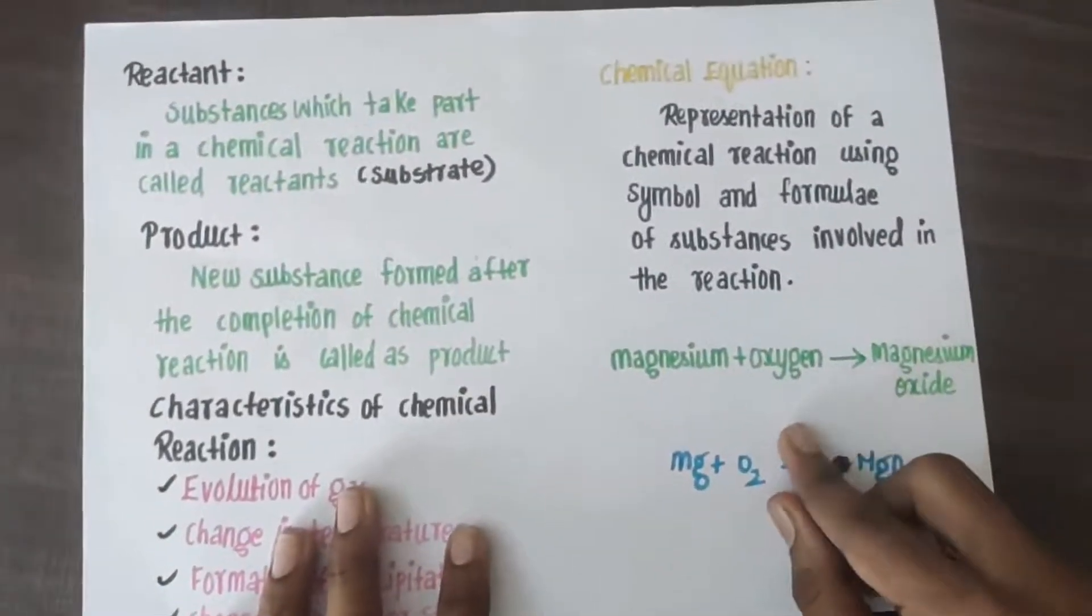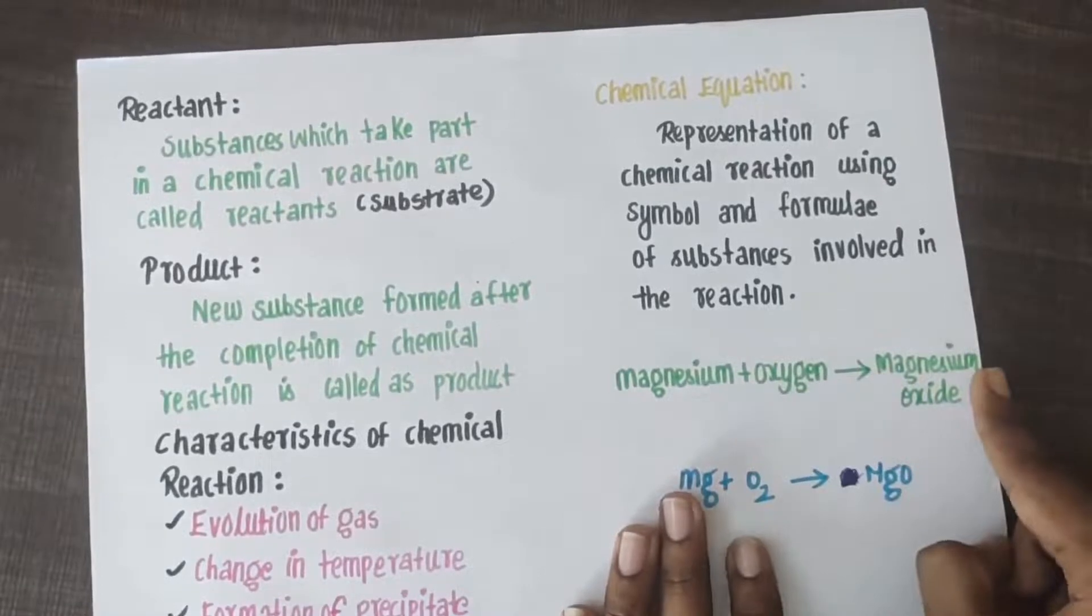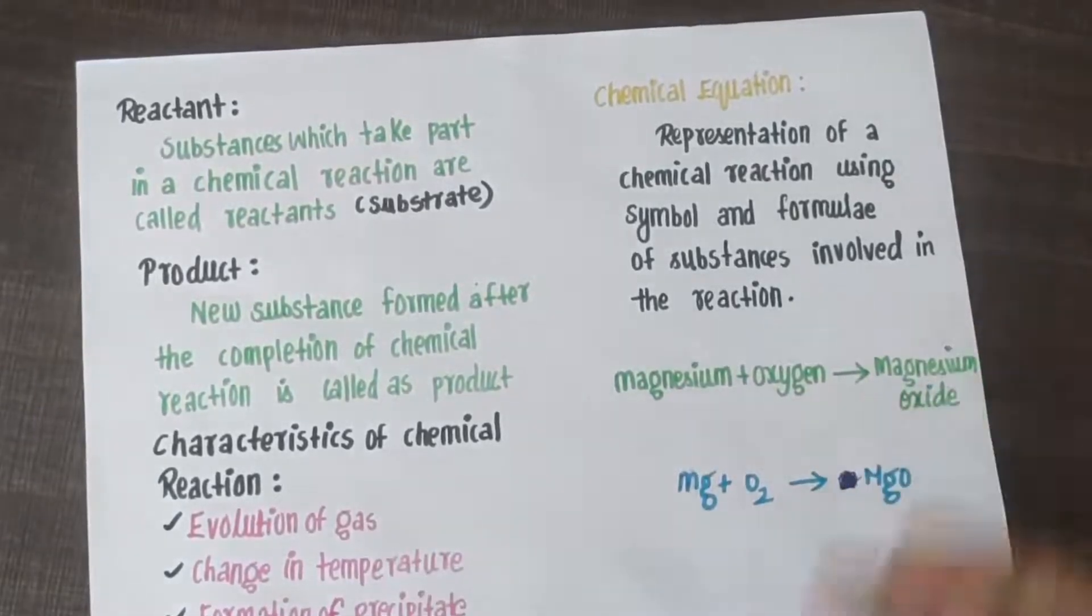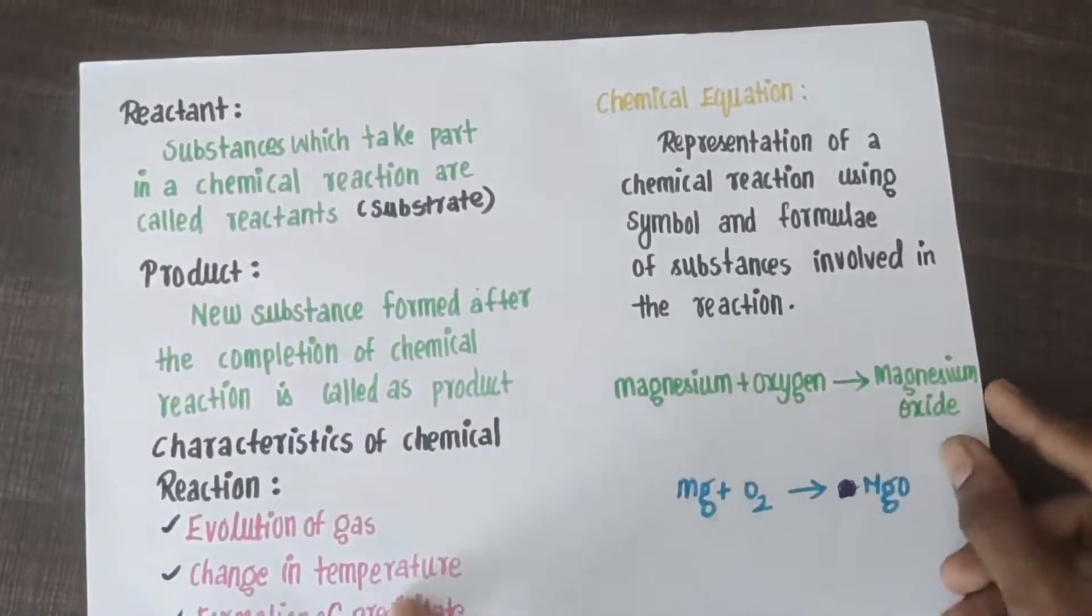Magnesium and oxygen gives magnesium oxide. We will talk about the chemical equation. This is the left hand side of the equation. This is the right hand side of the equation.